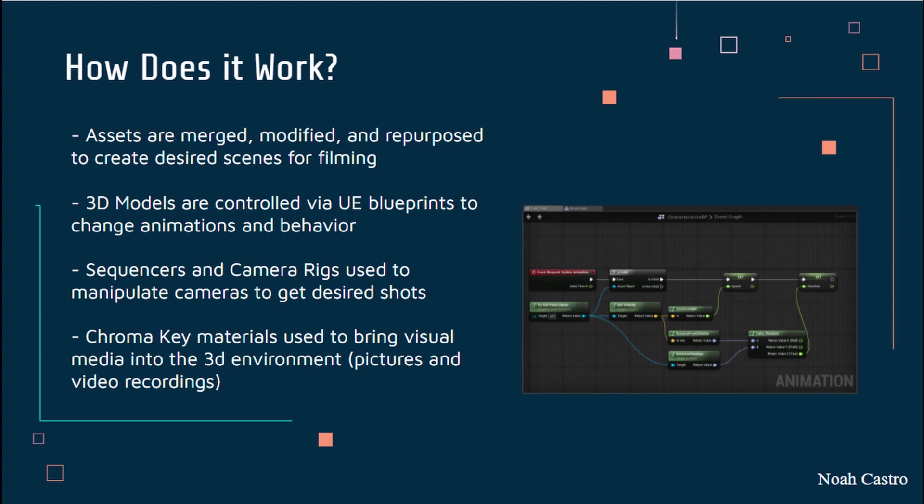Second, we have our acquired 3D character model that is controlled via Unreal Engine's blueprints to change the model's animations and behavioral AI. These blueprints are part of Unreal Engine's visual scripting system, based on a node-connecting interface to create gameplay elements within the Unreal Editor.